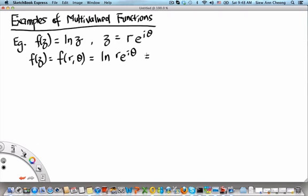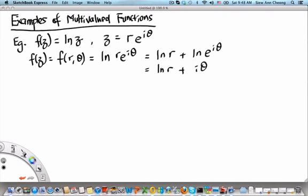Because this is the logarithm of a product, we can write this as a sum of logarithms: ln r + ln(e^(iθ)), which should become ln r + iθ. So it seems like this function poses no problem at all, except that when we recall...